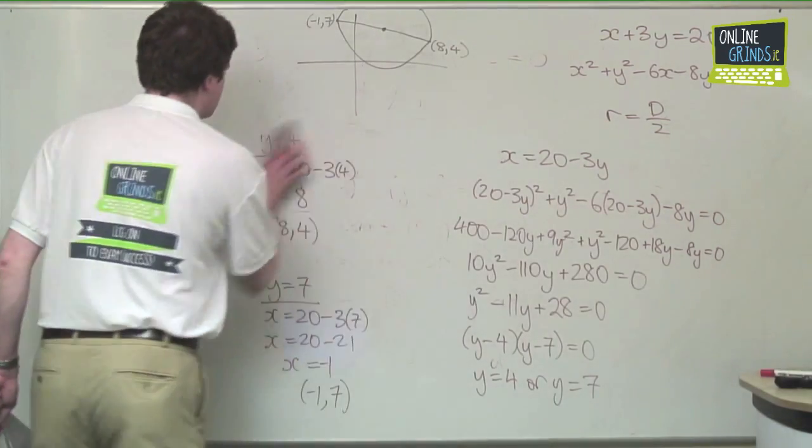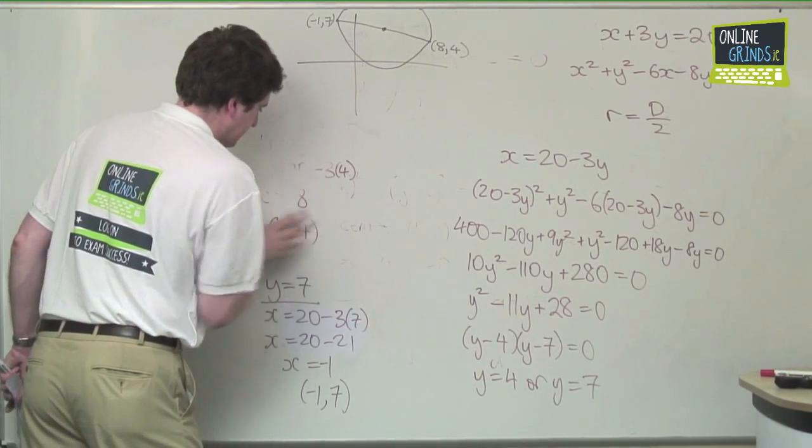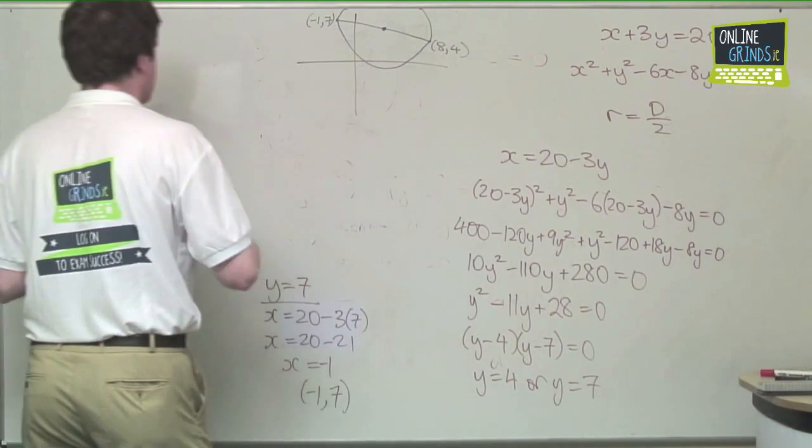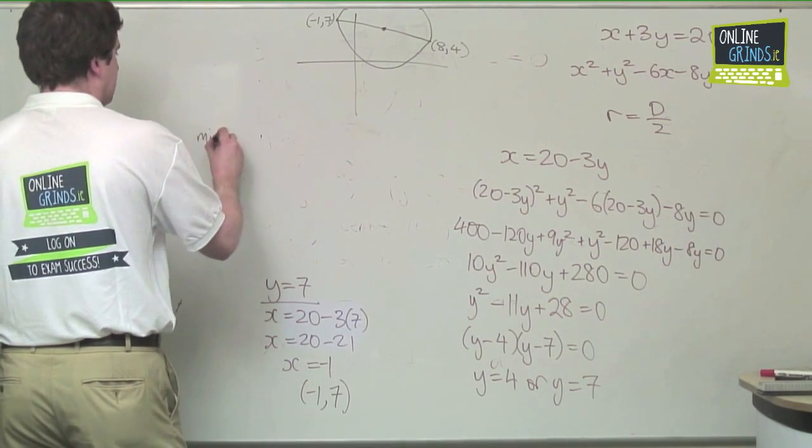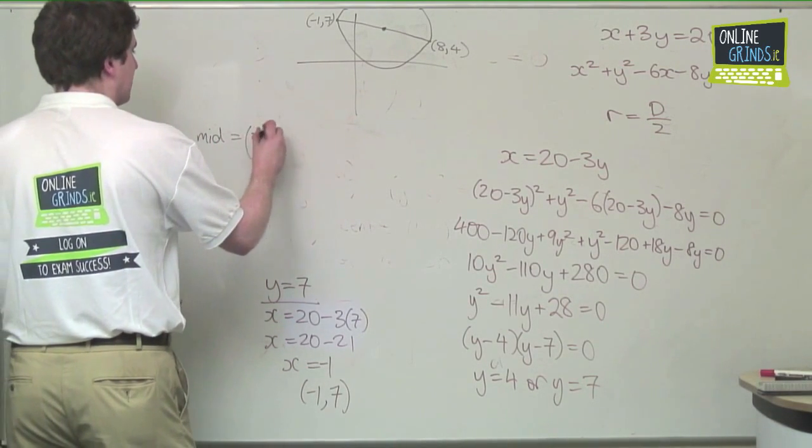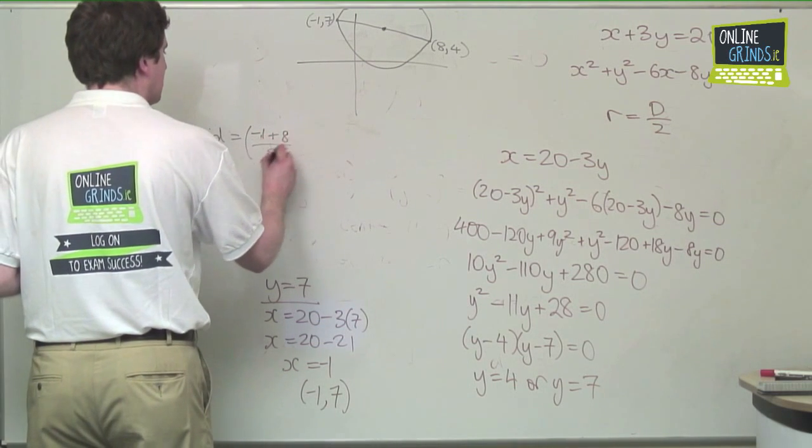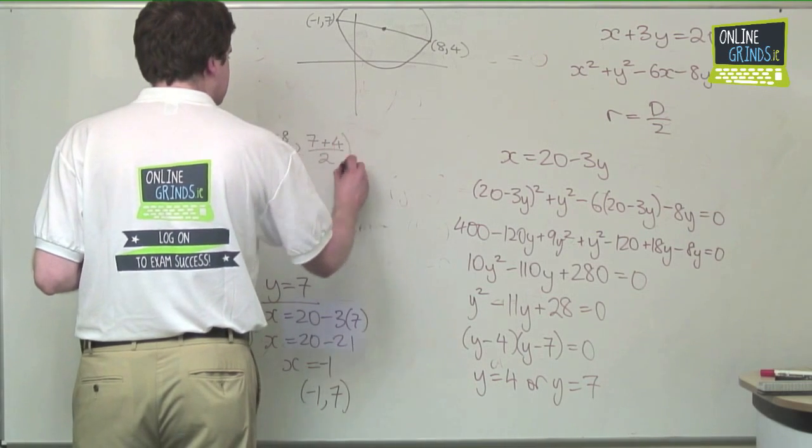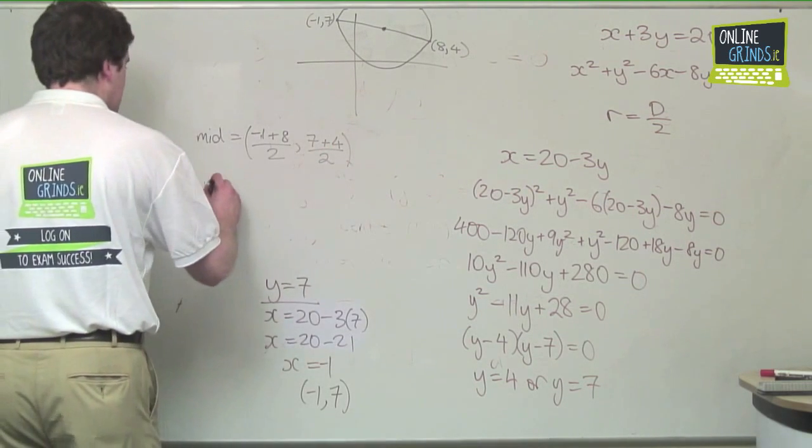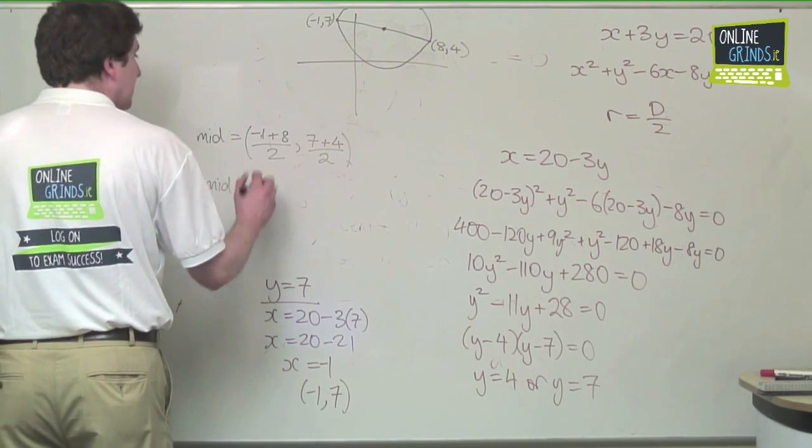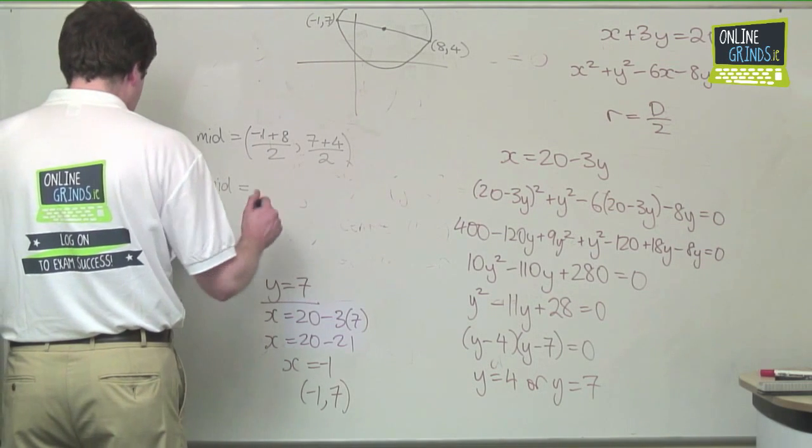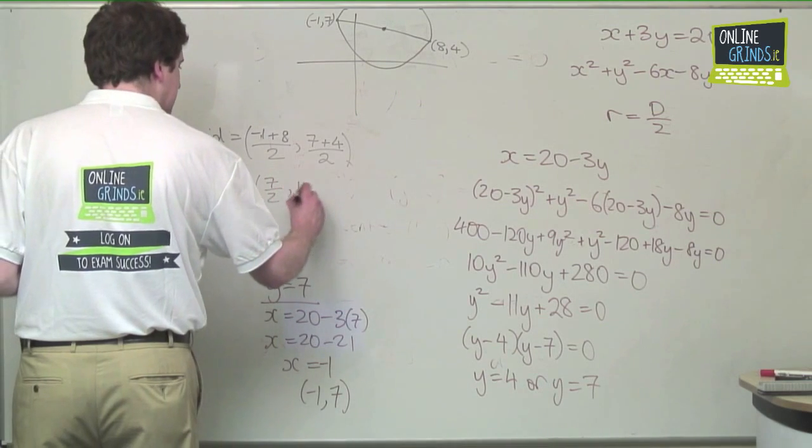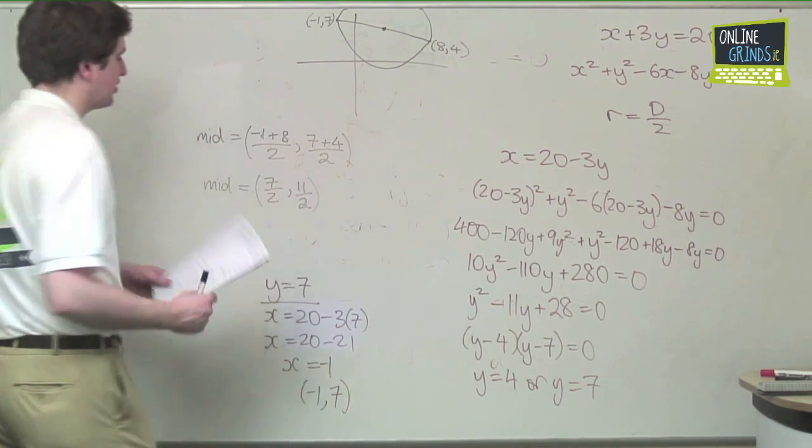So the midpoint: add the x's, divide by 2, add the y's, and divide by 2. So the midpoint, or the center of this circle, is equal to 7 over 2, 11 over 2. That's the center of our circle.